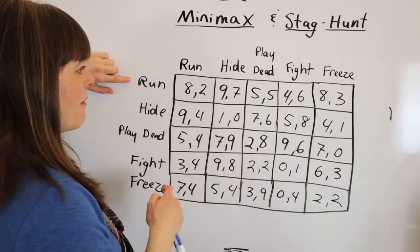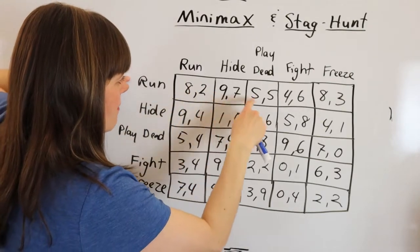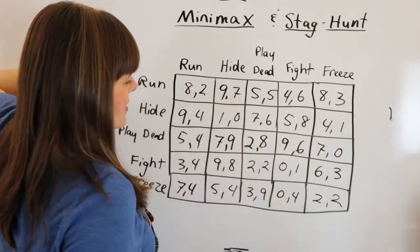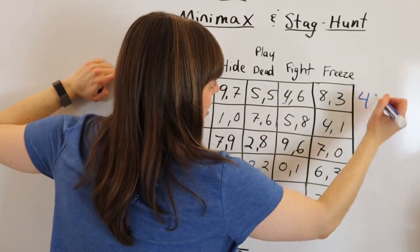So if I run, they focus on what is the worst of the outcomes, so 8, 9, 5, 4, and 8. The worst outcome in this thing is the 4. So I'm going to just put 4 over here.